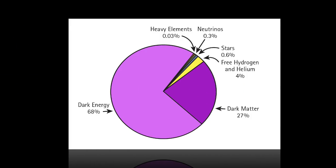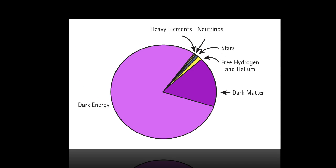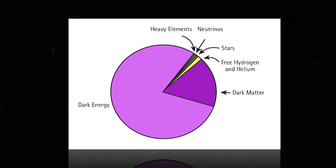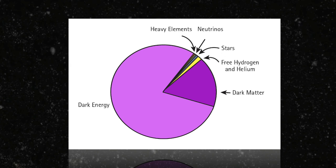And guess what we keep getting more of? The distribution within this chart isn't static. Billions of years from now, the percentage of matter will be even less as dark energy grows. The thinking of most cosmologists today, therefore, is the universe is set to continue expanding for eternity.